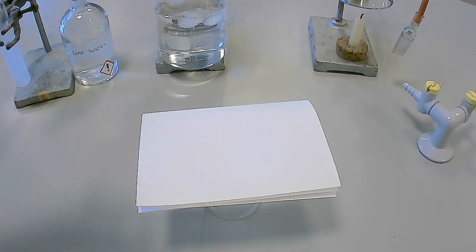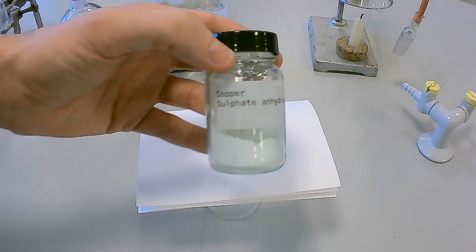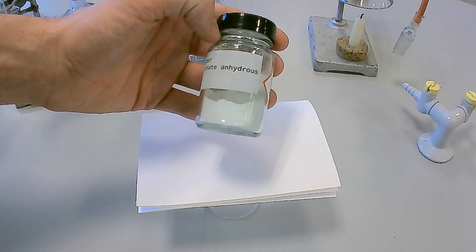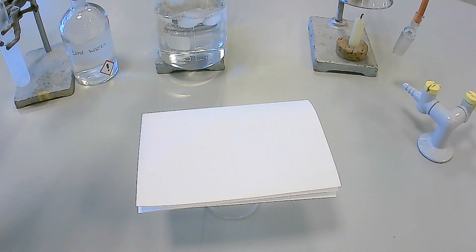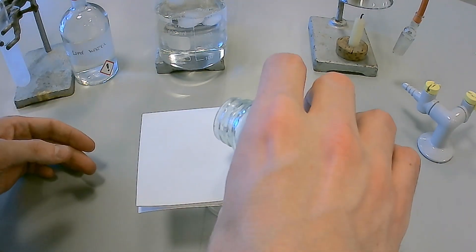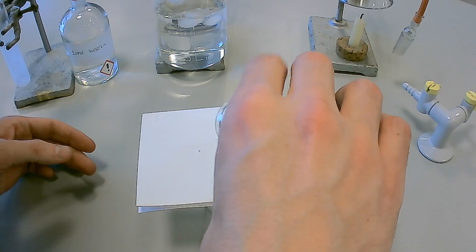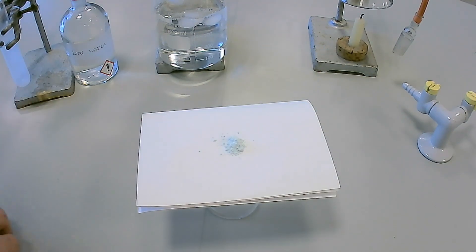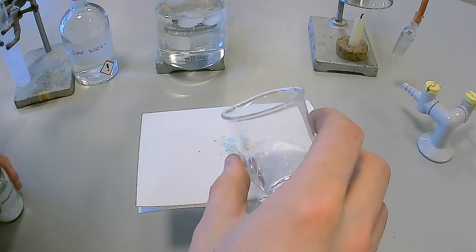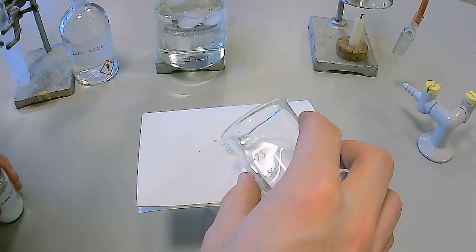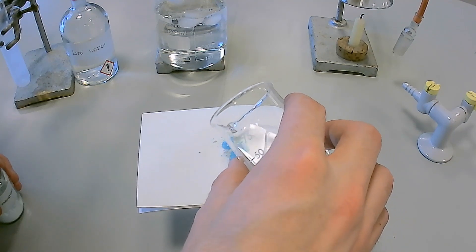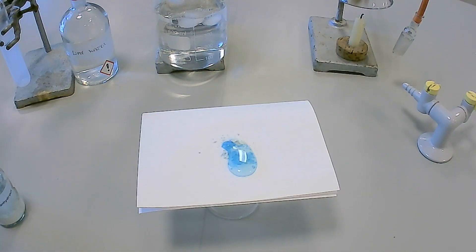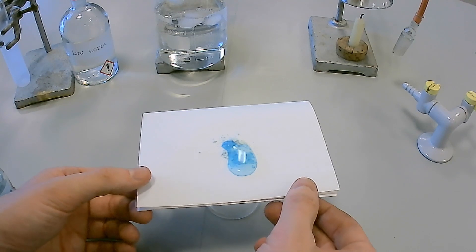An alternative test for water besides using cobalt chloride paper is to use anhydrous copper sulphate. On the addition of water, this white solid turns blue in color due to the formation of hydrated copper sulphate. The equation for this reaction is shown on screen now.